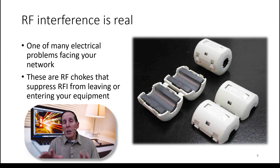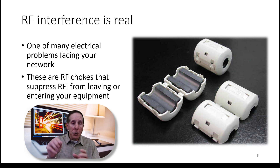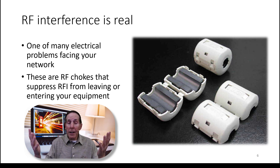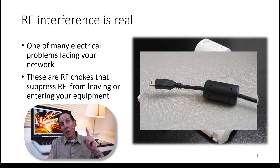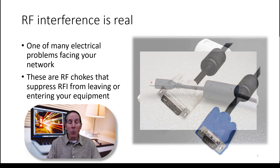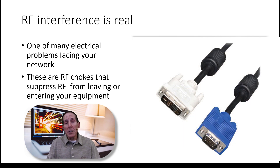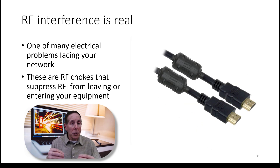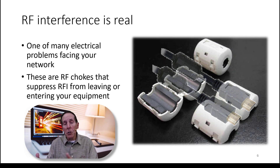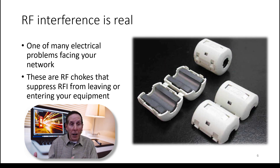This Chromebook will generate RFI. Radio frequency is just one of many electrical problems facing your network. If you notice the photo on the right, you see these round circular items that snap around cables because long cables act like antennas — they pick up RF energy. So when you have a USB cable, monitor cable, HDMI cable, or any kind of cable, it acts like an antenna. These ferrite chokes suppress RF interference from entering or leaving your equipment.